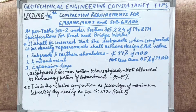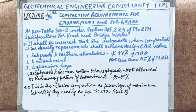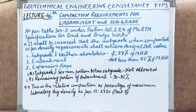As per table 302 under section 305.2.2.4 of MRTH — Ministry of Road Transport and Highway Specifications for Road and Bridge Works — it shall be ensured that the subgrade, when compacted as per density requirements, shall achieve the design CBR value, that is the design California Bearing Ratio value. What is more important is that if you have borrowed earth to compact for subgrade in layers, this code has specified requirements.